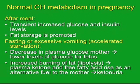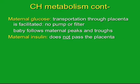If the mother-to-be is fasting or suffering from excessive vomiting such as hyperemesis, this results in accelerated starvation. There is a decrease in plasma glucose levels for both mother and fetus. Increased burning of fat — lipolysis — results in plasma ketone production and rising free fatty acids. Ketonuria therefore tells us the mother has switched to her secondary fuel. Maternal glucose transportation takes place through the placenta by facilitated diffusion — there is no active pump or filter. The baby follows the maternal peaks and troughs. It is very important to remember that.